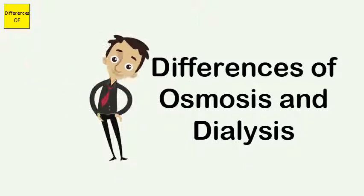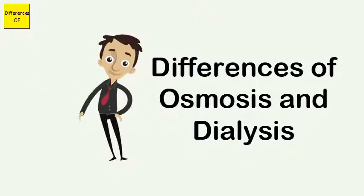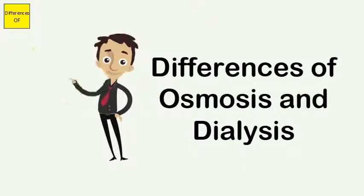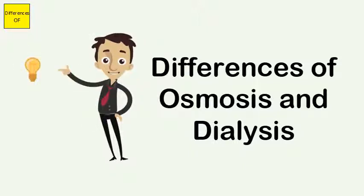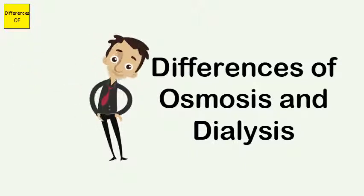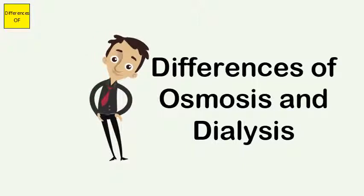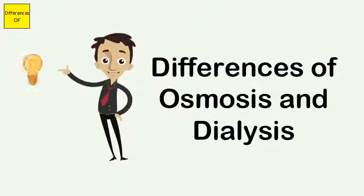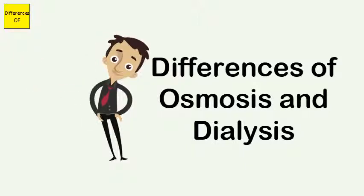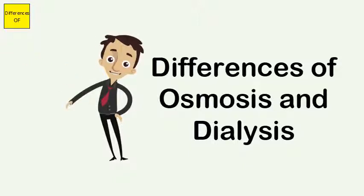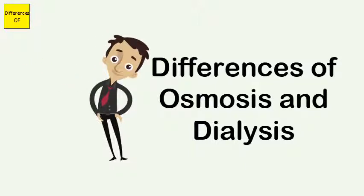Osmosis is of two types: reverse osmosis and forward osmosis. Dialysis is of five types: hemodialysis, peritoneal dialysis, hemofiltration, hemodiafiltration, and intestinal dialysis.